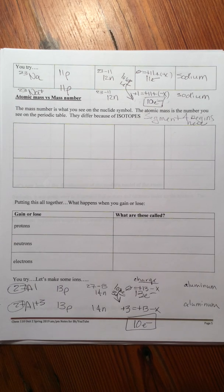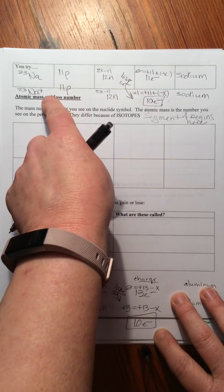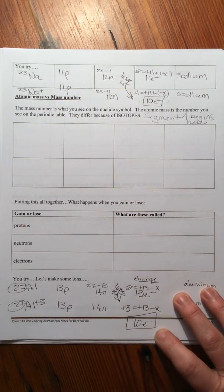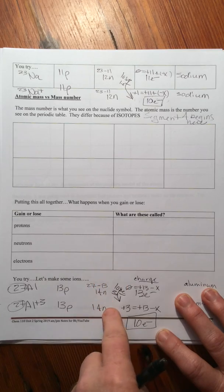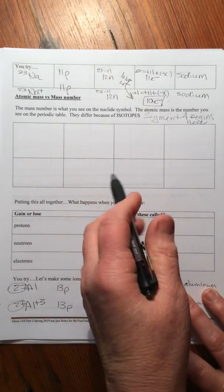In the last segment, we showed how the loss of electrons yields a positive charge. Loss of electrons, positive charge. So I'm going to use some of this space up here.